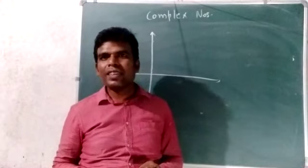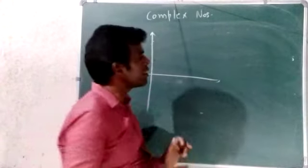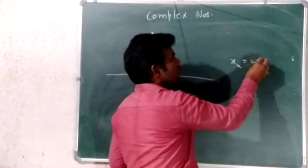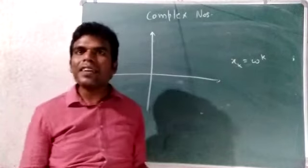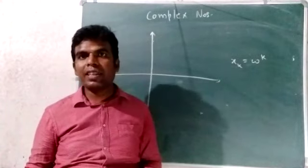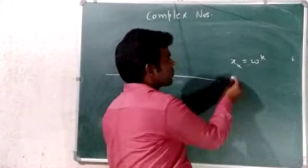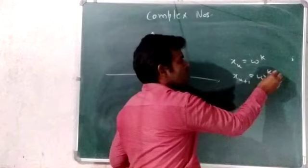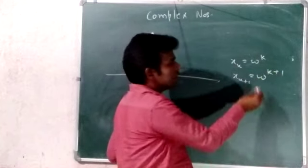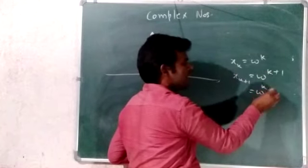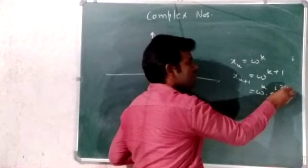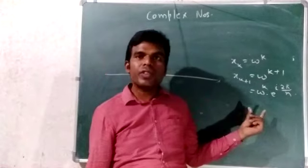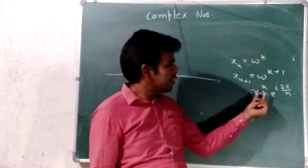You can follow a pattern. The k-th root is omega raised to k. These roots are in geometric progression (GP). The next root after omega raised to k is omega raised to k+1, which equals omega raised to k multiplied by e raised to iota 2π upon n. Using the concept of rotation, each root is obtained by rotating the previous one by 2π upon n.